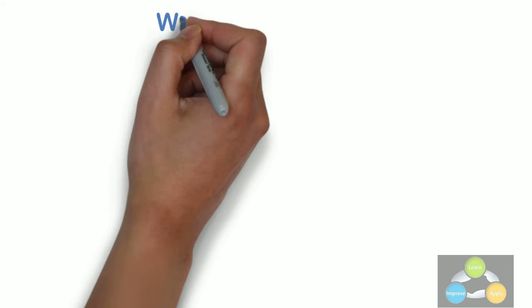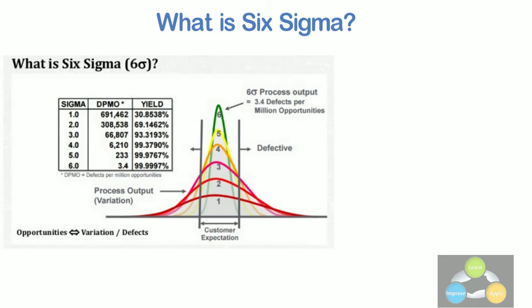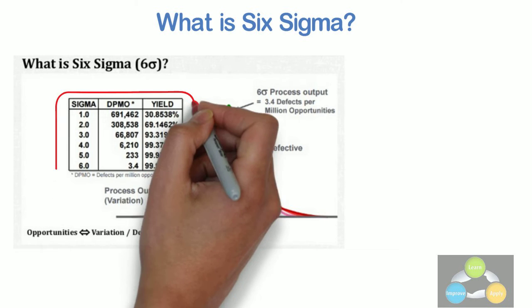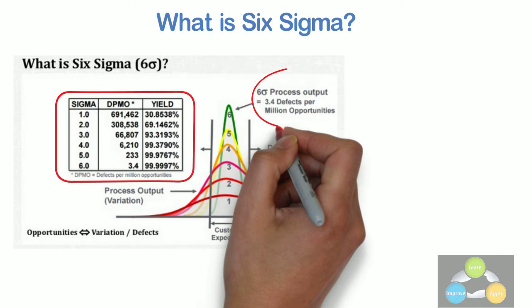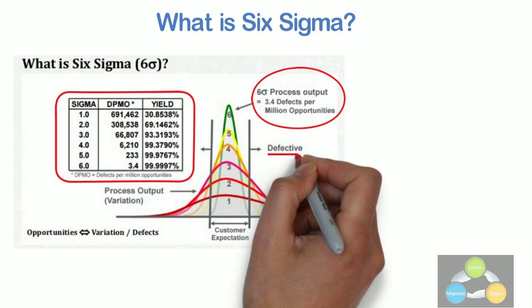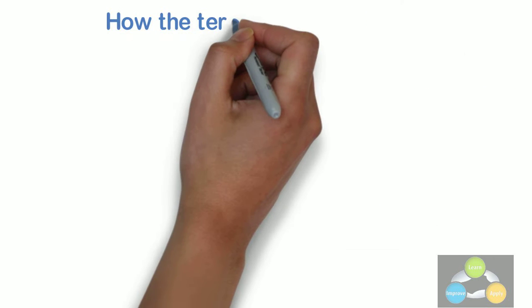After understanding the meaning of sigma, the next question is what is Six Sigma? Look at the below graph. The statistical representation of Six Sigma describes quantitatively how a process is performing. To achieve Six Sigma, a process must not produce more than 3.4 defects per million opportunities. A Six Sigma defect is defined as anything outside of customer specifications. Now let's see how the term Six Sigma came.